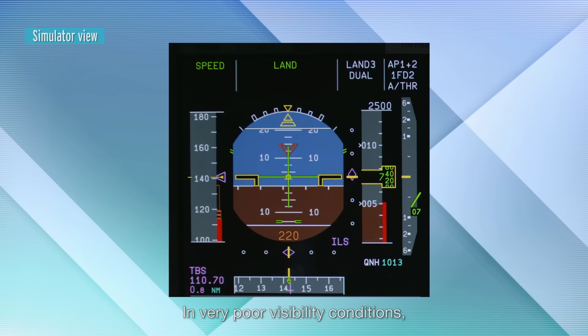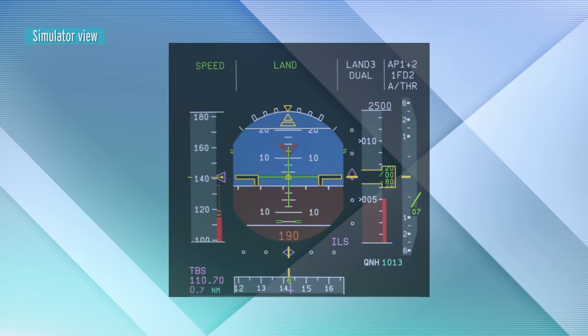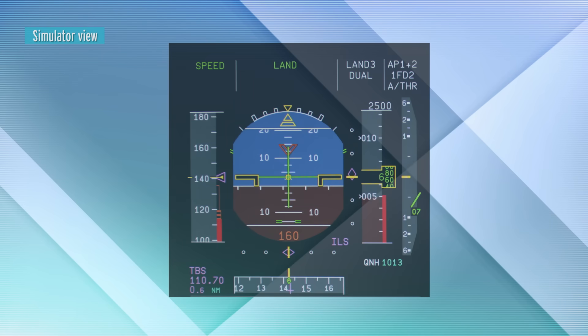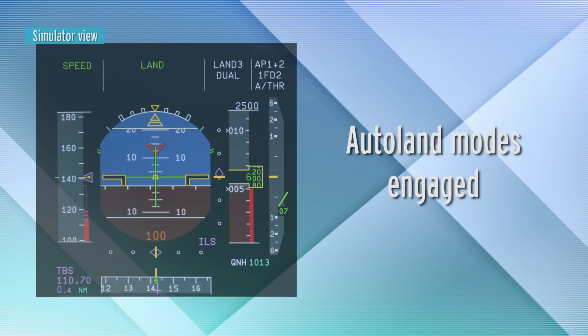In very poor visibility conditions, it is not possible for a pilot to perform a manual landing. Therefore, an Autoland function is developed in the autopilot.